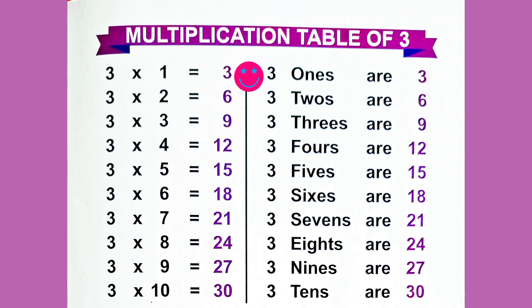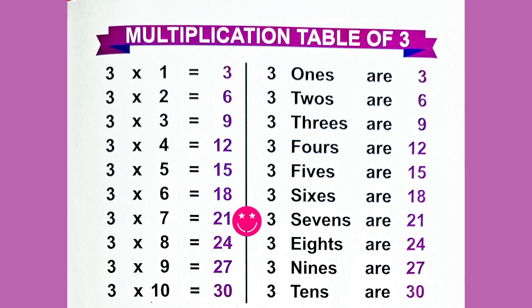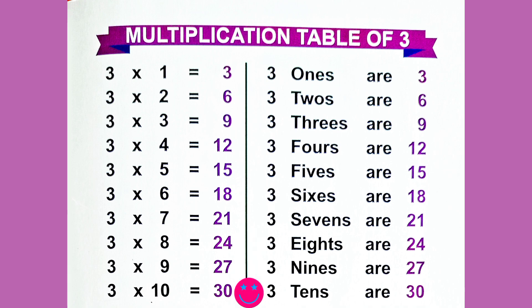3 1's are 3. 3 2's are 6. 3 3's are 9. 3 4's are 12. 3 5's are 15. 3 6's are 18. 3 7's are 21. 3 8's are 24. 3 9's are 27. 3 10's are 30.